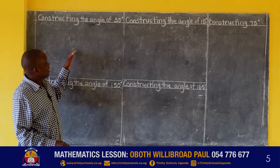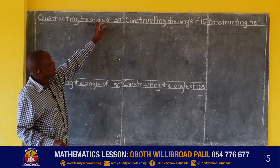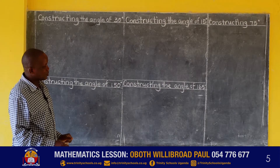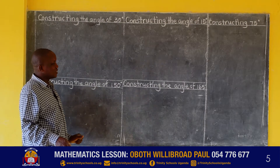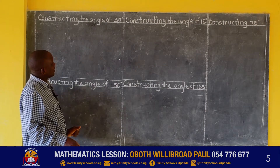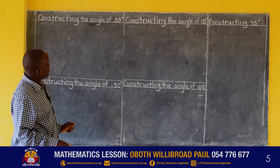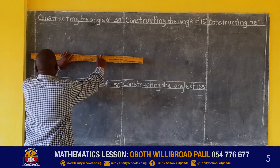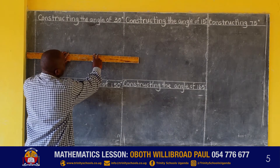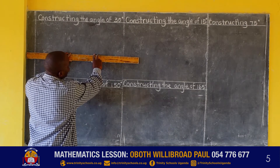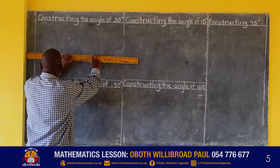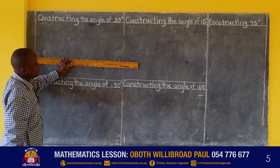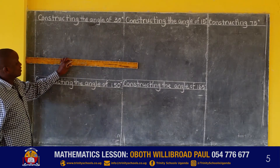We learned how to construct the angle of 60 degrees. We want to construct 30 degrees, but let us start with the angle of 60, because it's the one that gives us the 30 degrees.